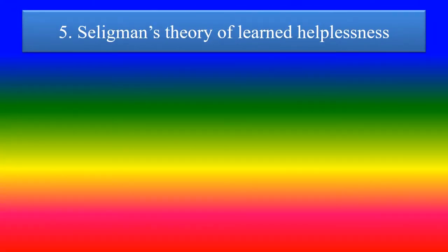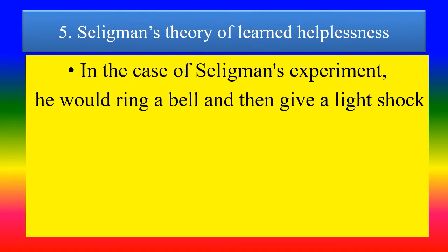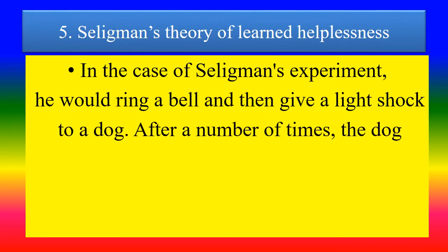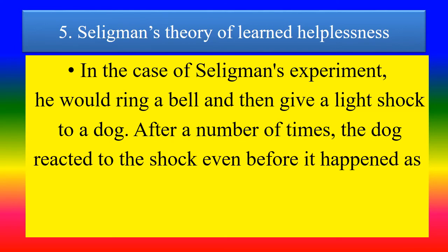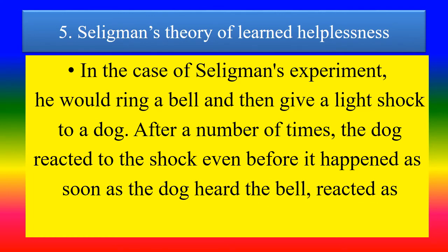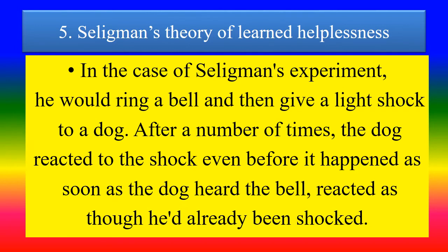Fifth Model: Seligman's Theory of Learned Helplessness. In Seligman's experiment, he would ring a bell and then give a light shock to a dog. After a number of times, the dog reacted to the shock even before it happened — as soon as the dog heard the bell, it reacted as though it had already been shocked.